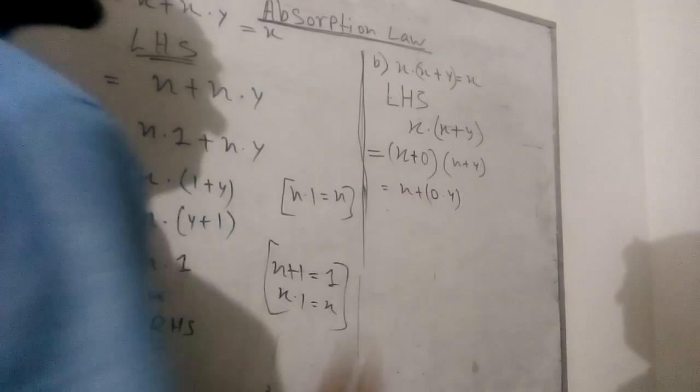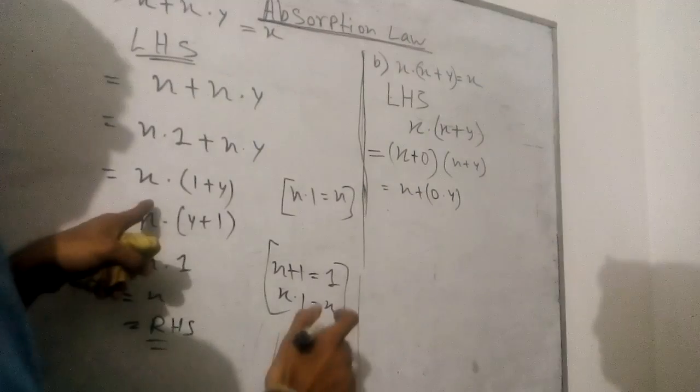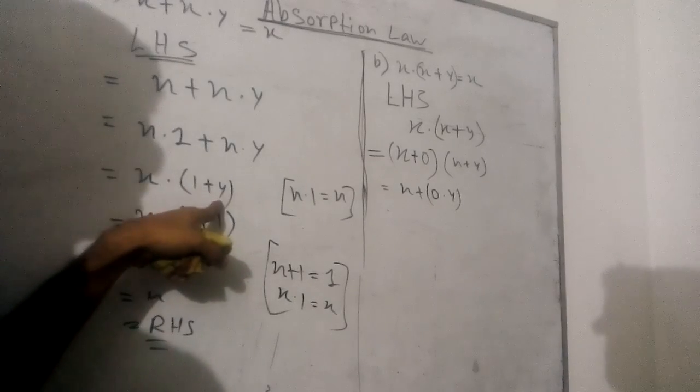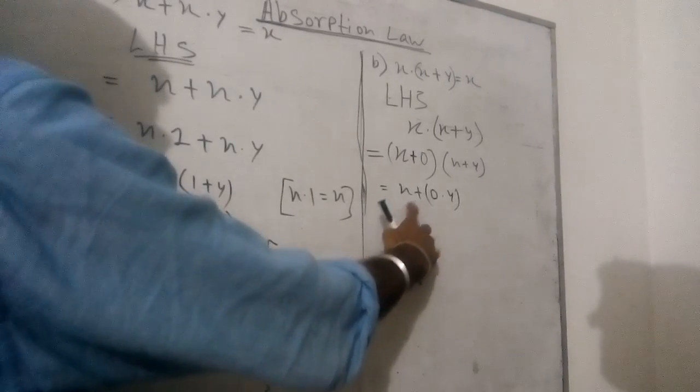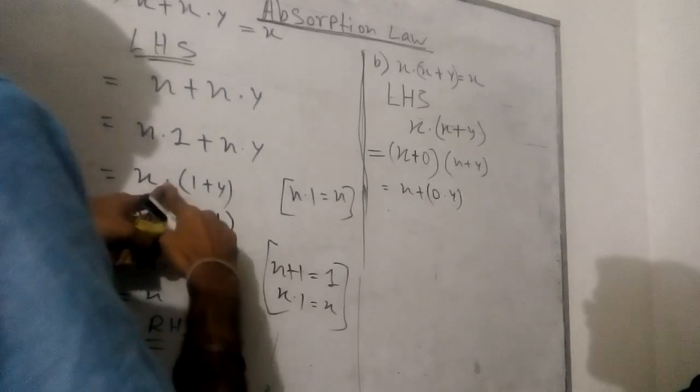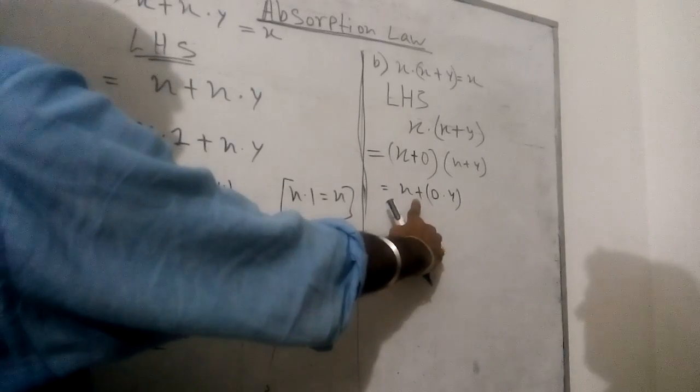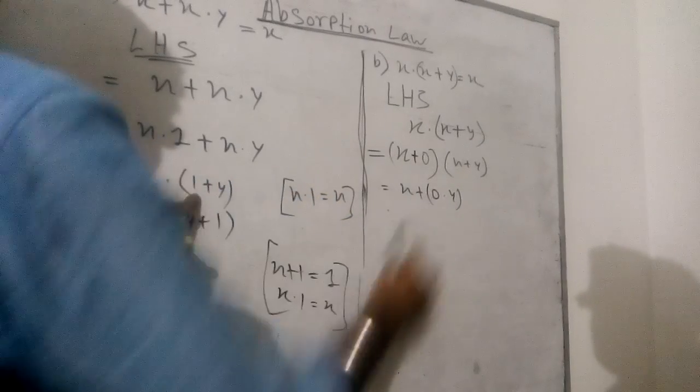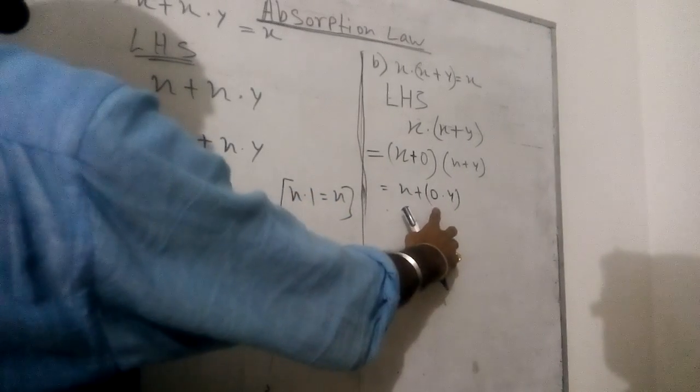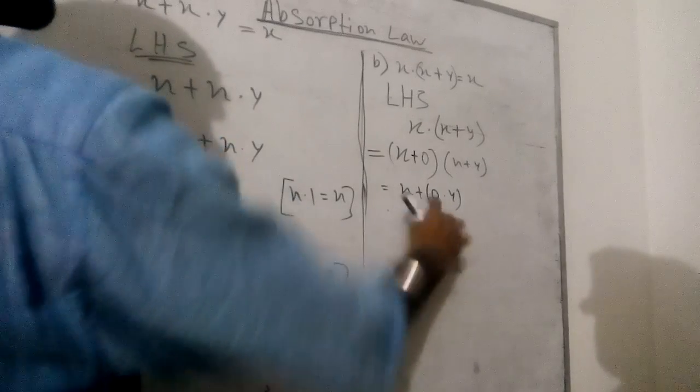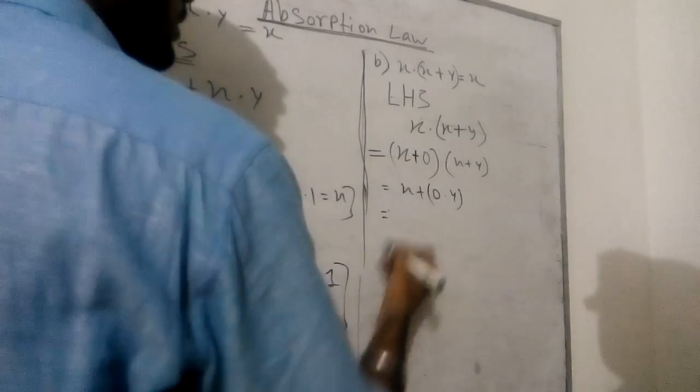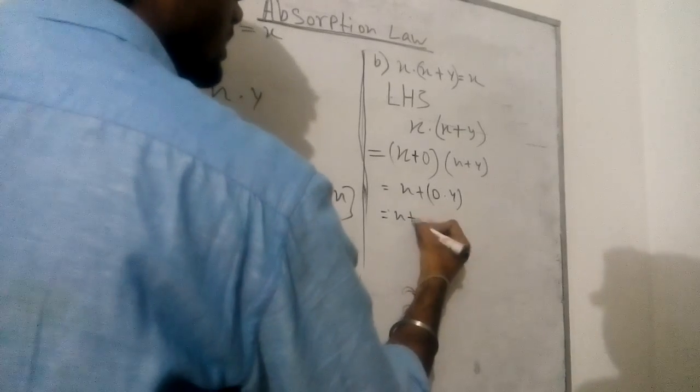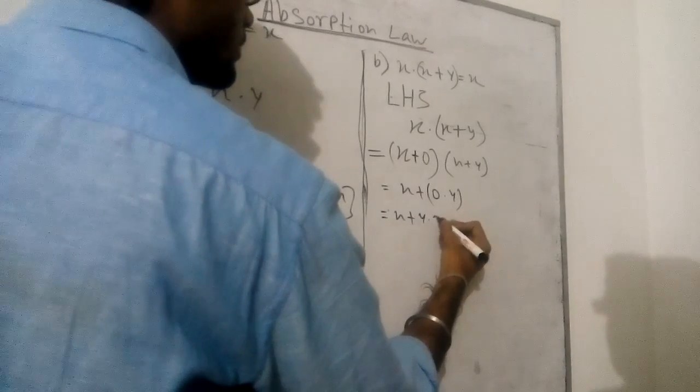We can again check the line. We have x into 1 plus y, and in the place of 'into' we have written plus, in the place of 1 we have written 0, in the place of 'plus' we have written 'into'. So we can change the places: x plus y into 0.